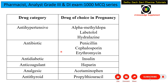For other drug classes during pregnancy: antihypertensives — alpha-methyldopa, labetalol, and hydralazine. Antibiotics — penicillin, cephalosporin, and erythromycin; note that if the patient is allergic to penicillin, an alternative or combined therapy should be used. Antidiabetic drug — insulin. Anticoagulant — heparin. Analgesic — acetaminophen (paracetamol). Antithyroid — propylthiouracil.